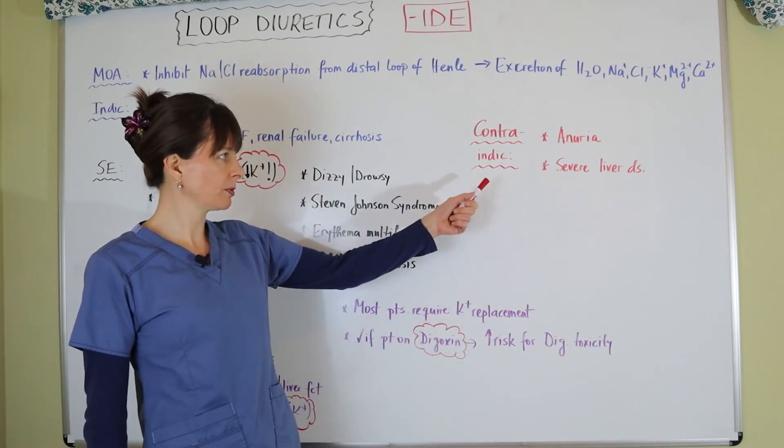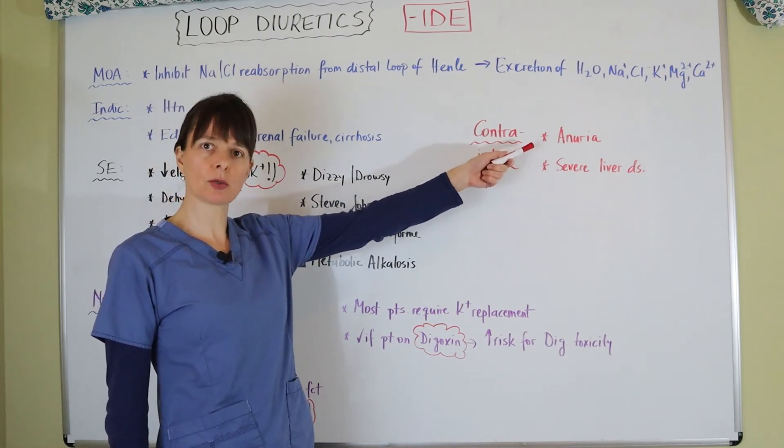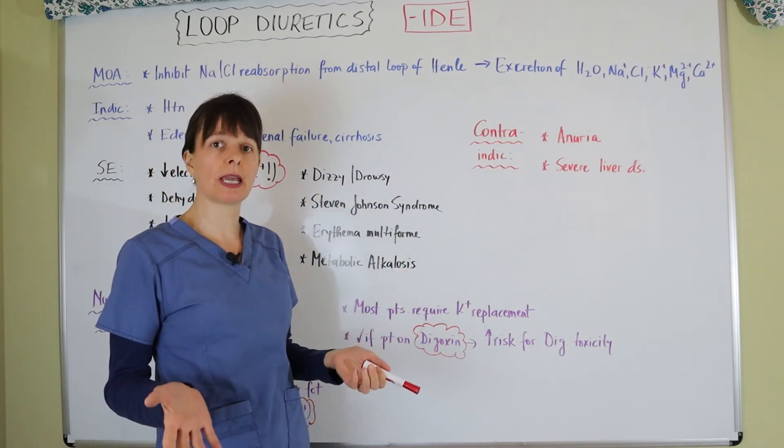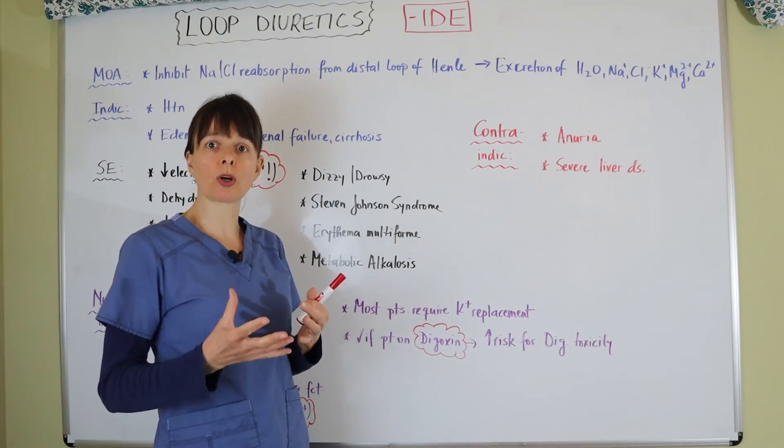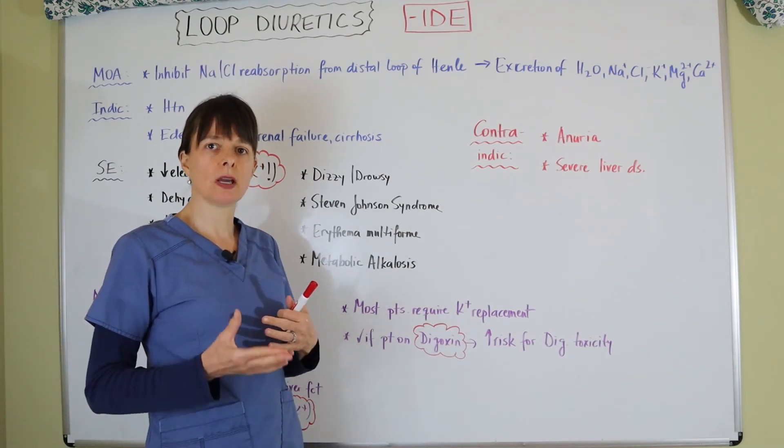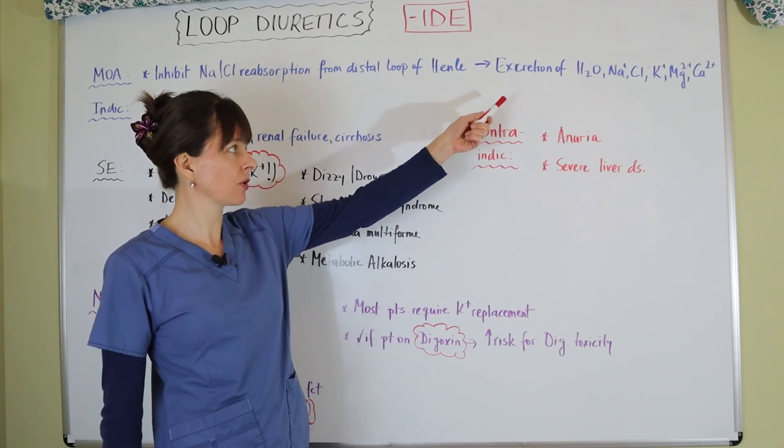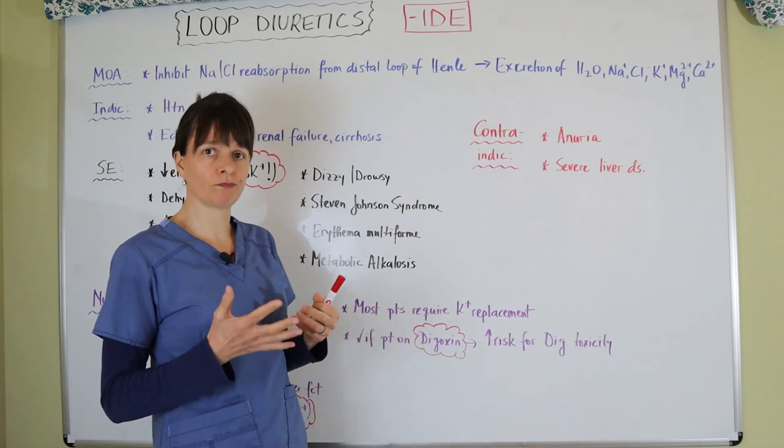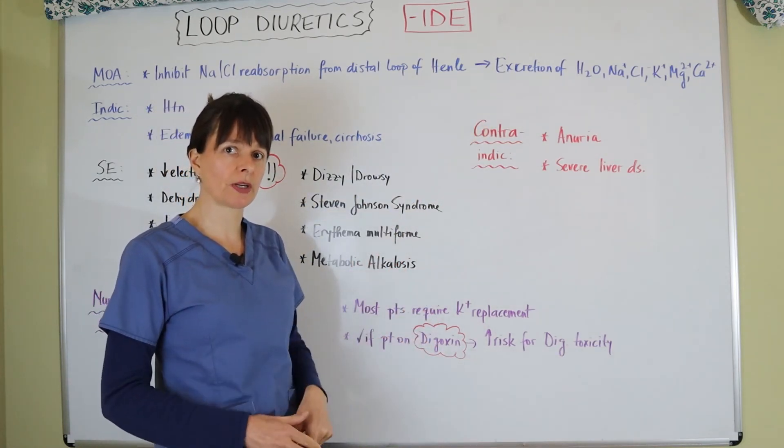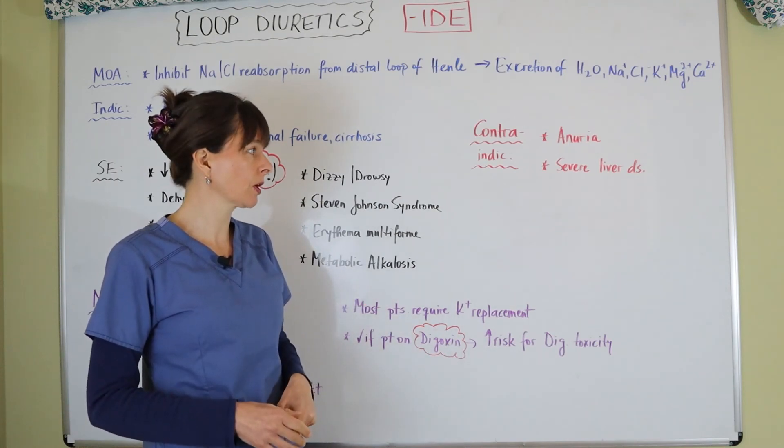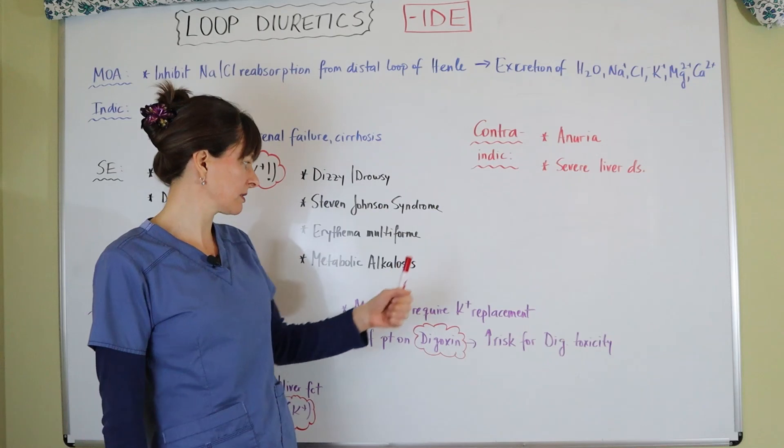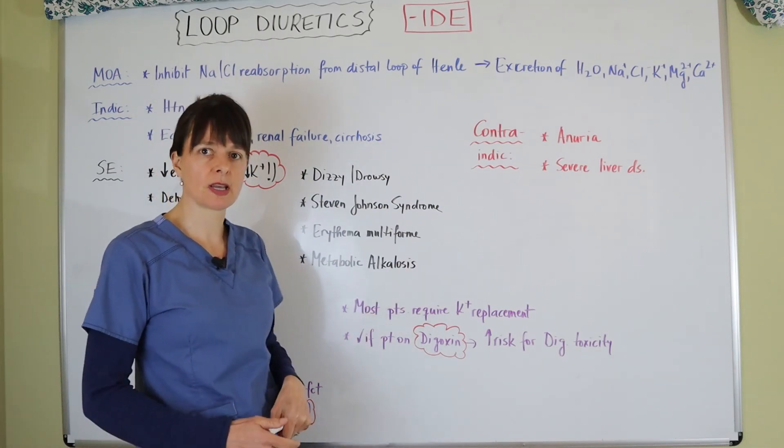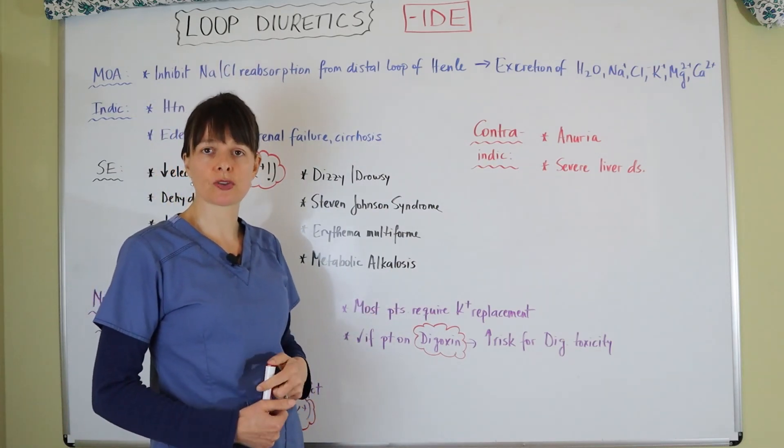And contraindications for loop diuretics would be anuria. So if the patient is not producing any urine at all, then the loop of Henle is not really working and can't really excrete all these different electrolytes as well as water. So there's nothing to work on, so it's contraindicated because it's not even going to work. And then also it's contraindicated in severe liver disease because of the risk for metabolic alkalosis and the associated complications that can occur.